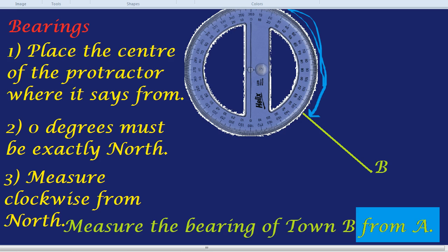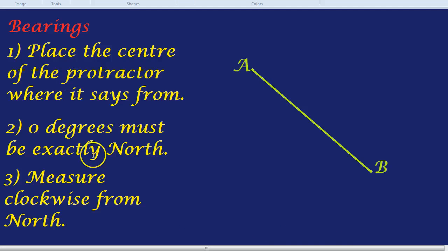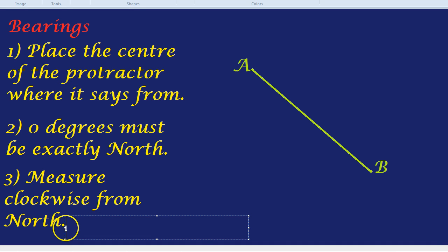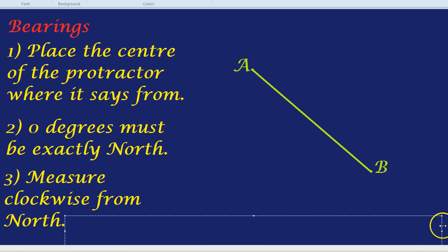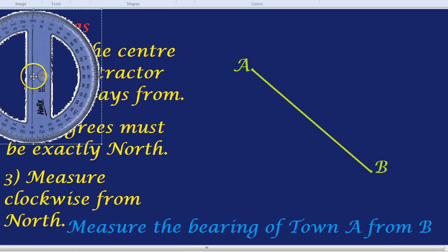Let's imagine for a second, though, that the question was measure the bearing of town A from town B. So, measure the bearing of town A from B. So important that it said from B, we're going to place the centre of our protractor at B, as before.